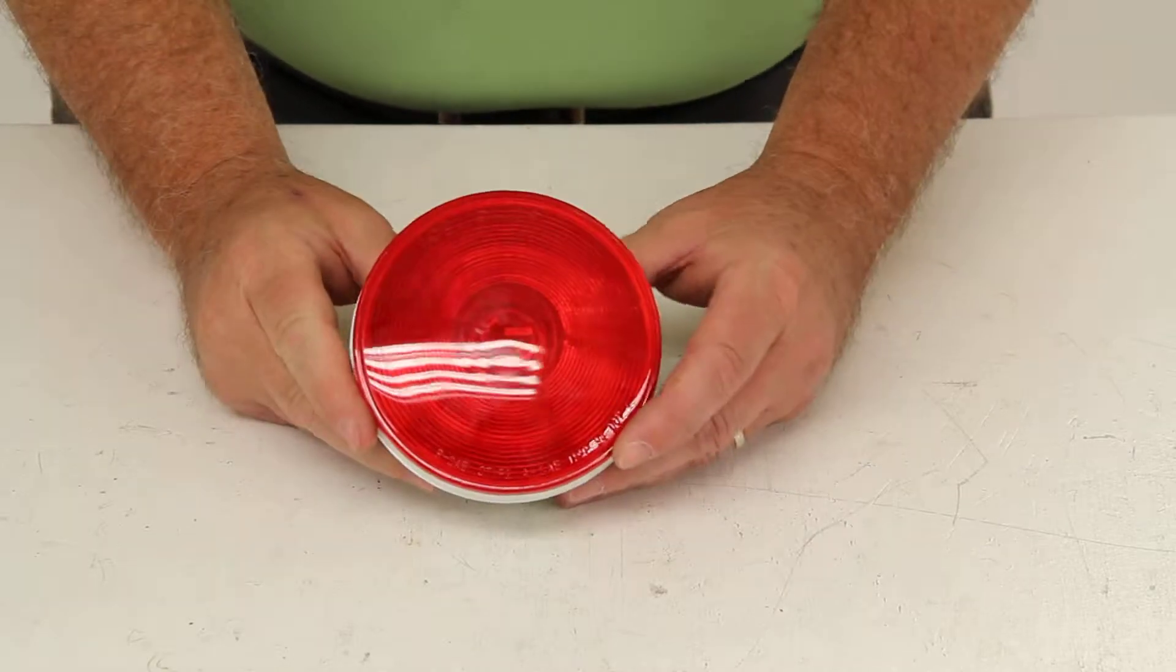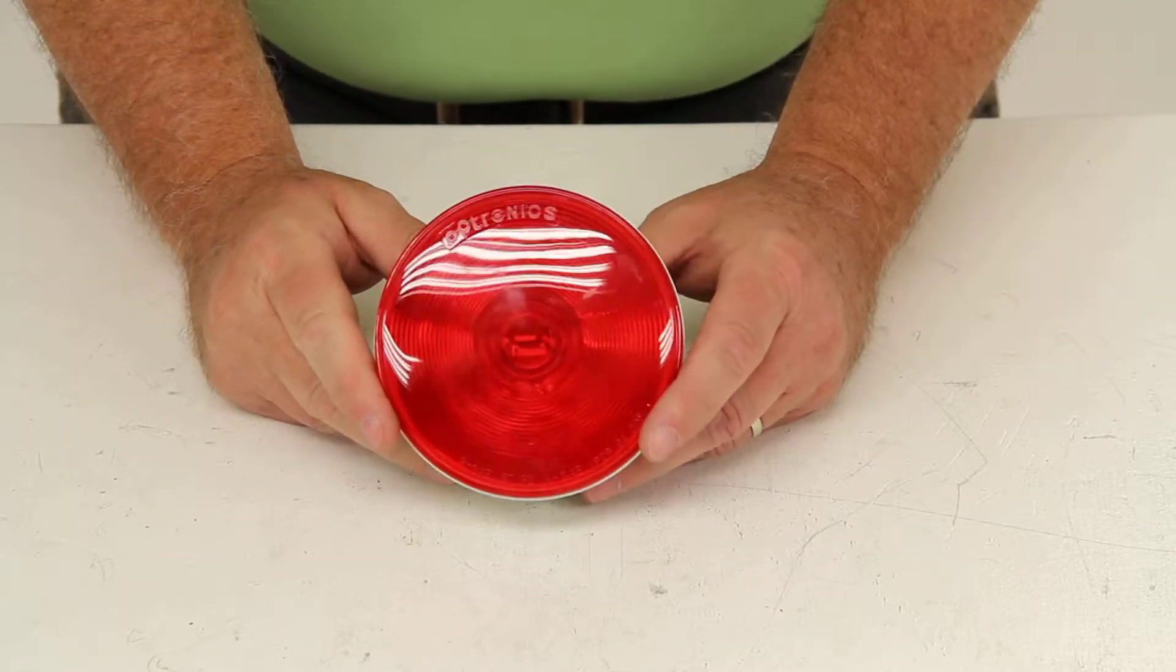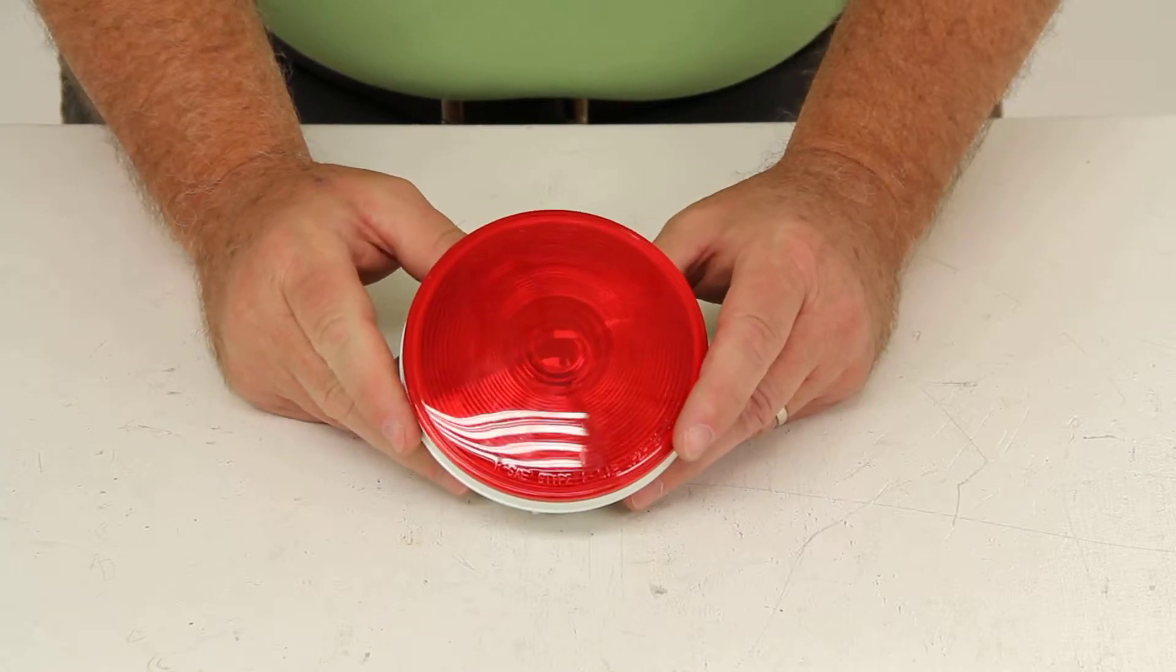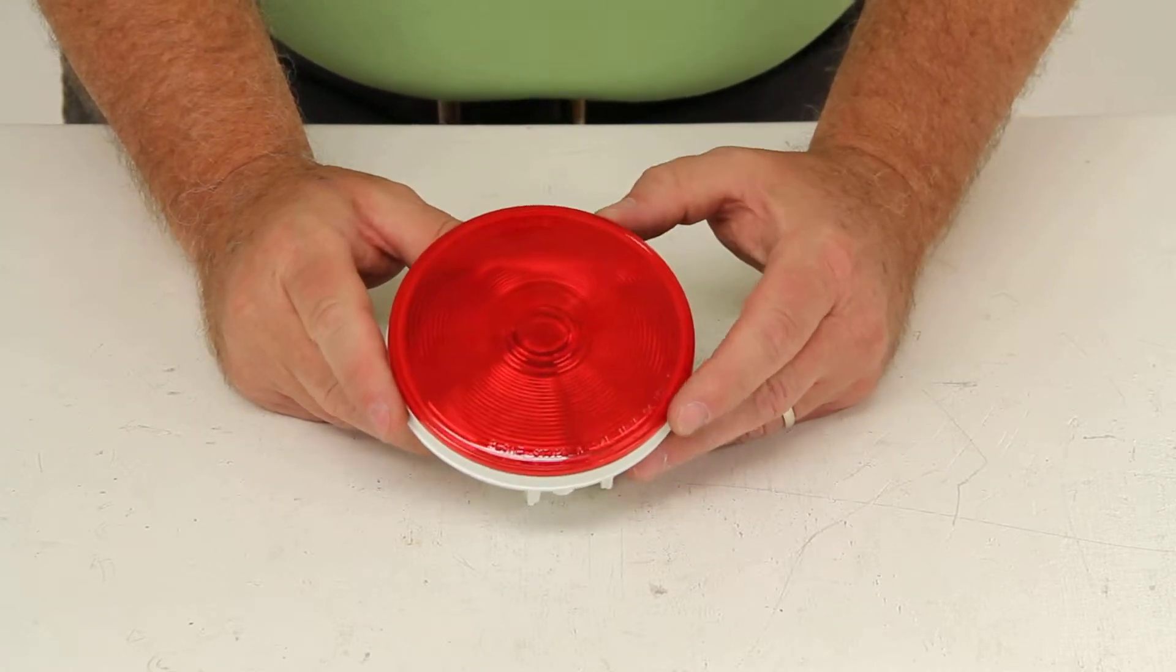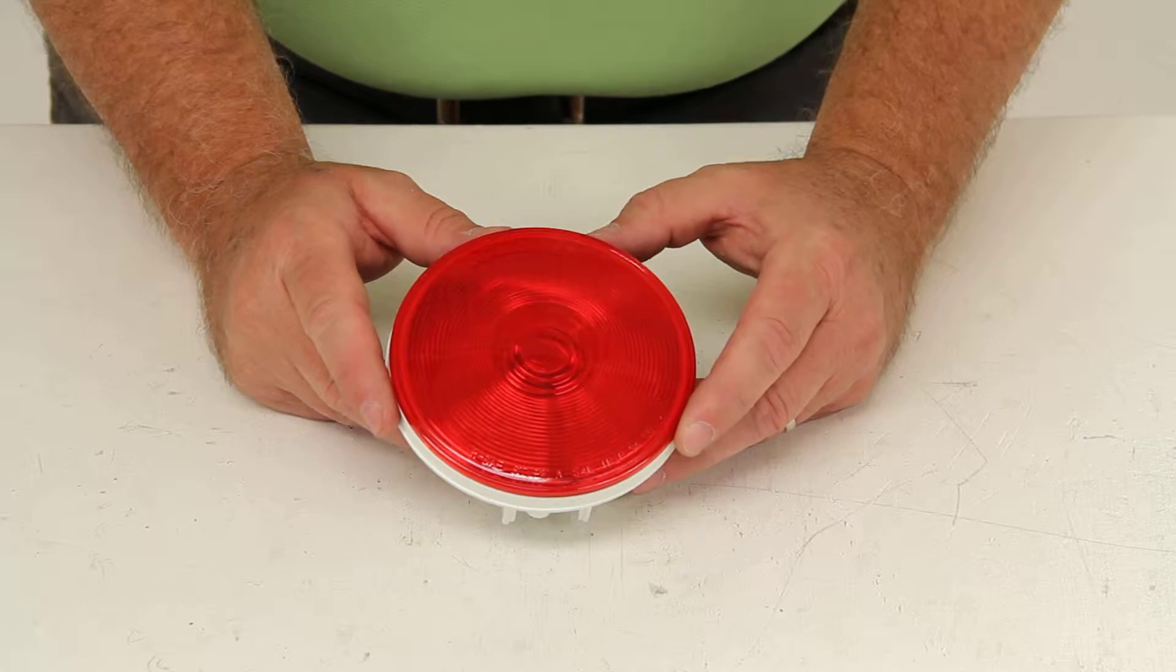Today we're going to review part number ST45RB. This is the Optronics Sealed 4-inch Round Trailer Stop, Turn, and Tail Light.